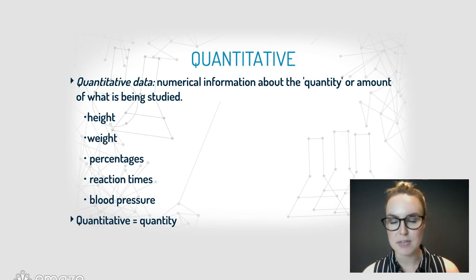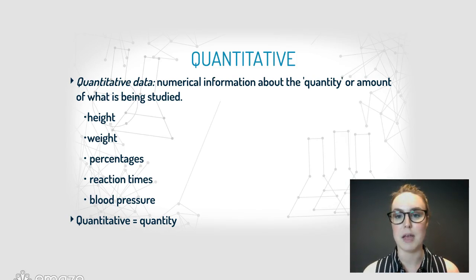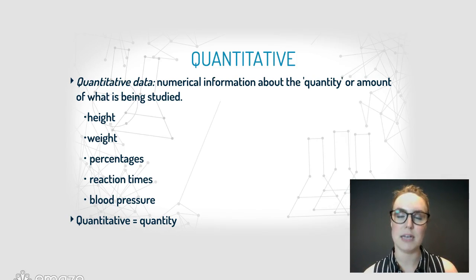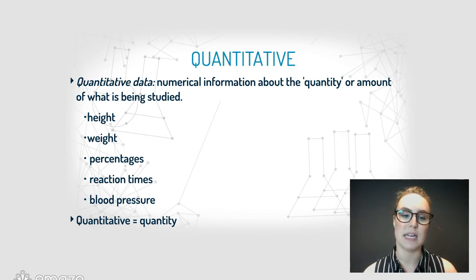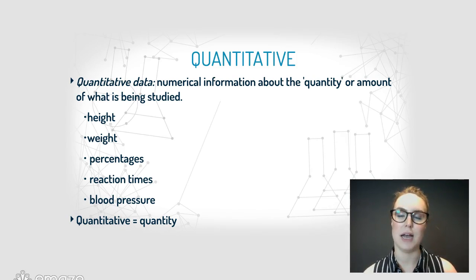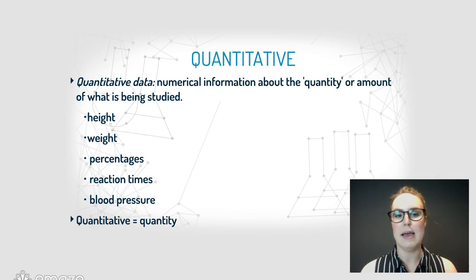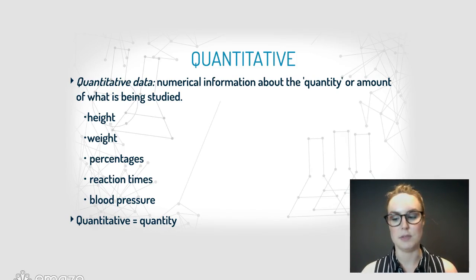Quantitative data is numerical information about the quantity or amount of what is being studied. Here you are dealing with numbers and quantities. So it could be things like height, weight, percentages, reaction times, and blood pressure. They are quantities you are measuring and you will always get a number as a response.